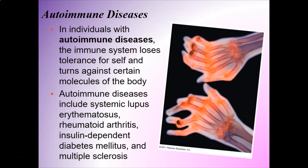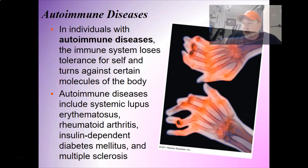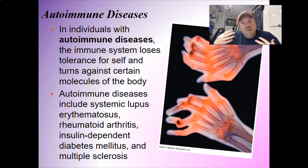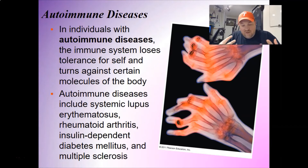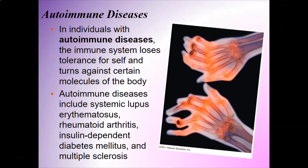You also have autoimmune diseases - this is when the immune system loses tolerance for self and turns against certain molecules of the body. Remember, one of the key tenants of your immune system is that it has to learn self and obey self-tolerance. If your immune system's internal military confuses you for the bad guys and starts attacking you, that's called an autoimmune disorder. These diseases include systemic lupus erythematosus, rheumatoid arthritis, insulin-dependent diabetes mellitus, and multiple sclerosis.